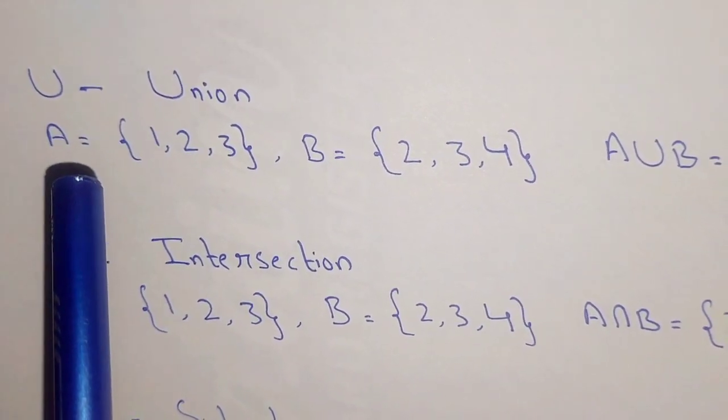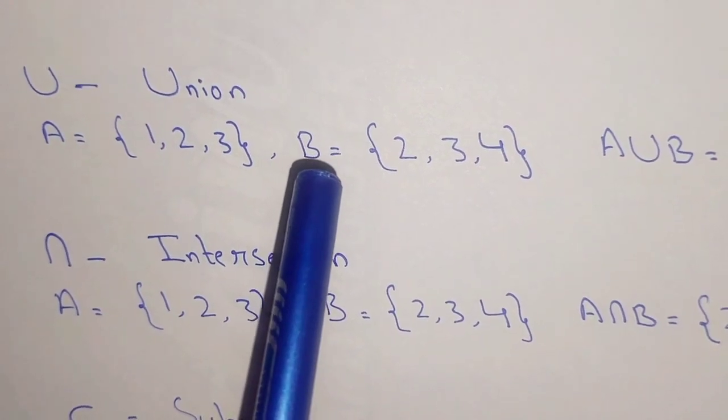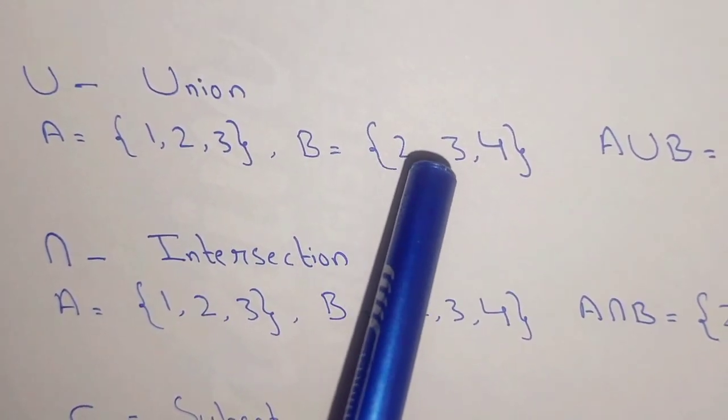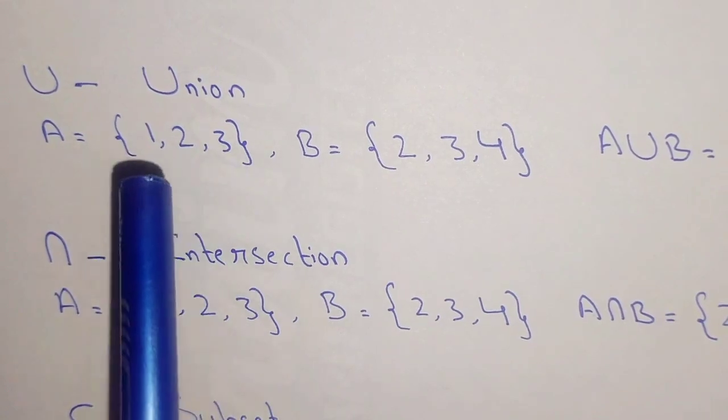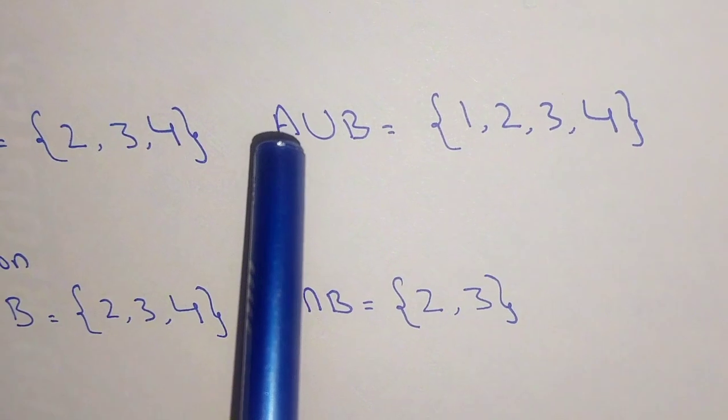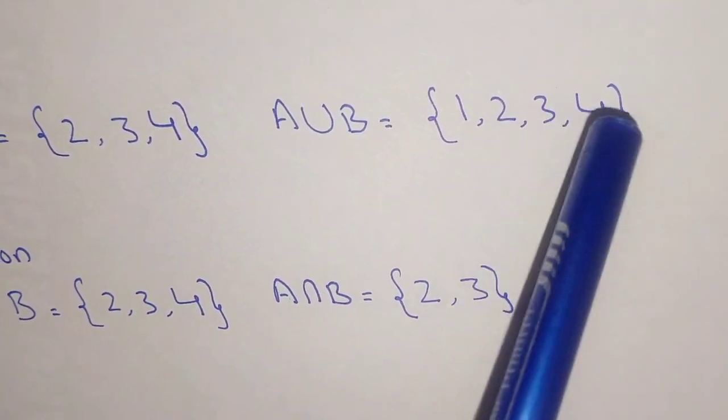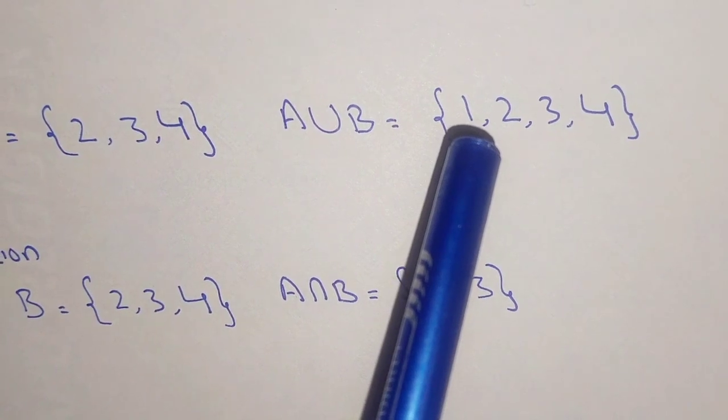For example, we have set A with elements 1, 2, and 3, and set B with elements 2, 3, and 4. We combine the elements of both sets to write a new set. A union B equals {1, 2, 3, 4}. We can write each element only once.